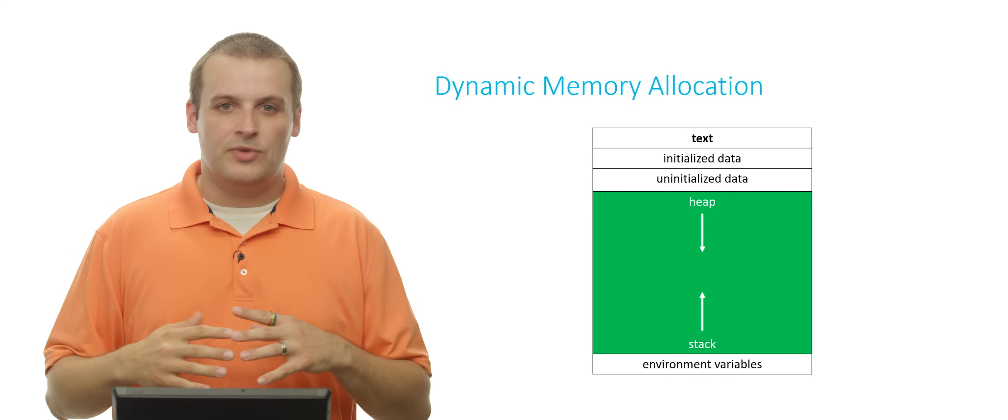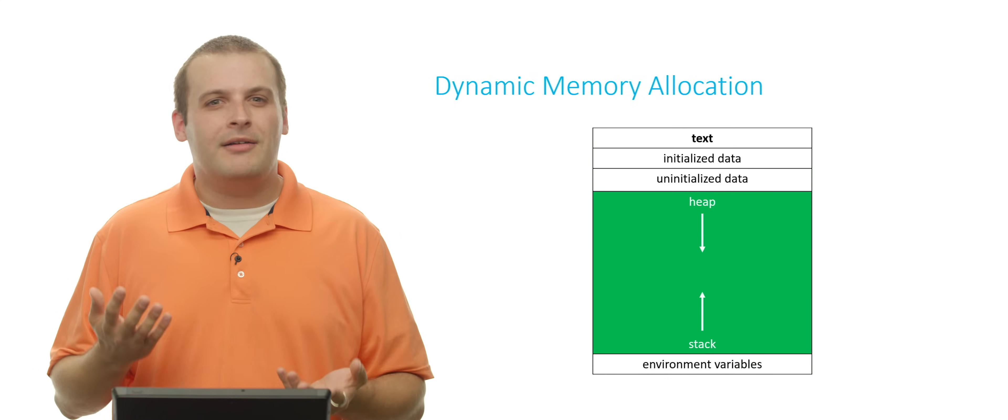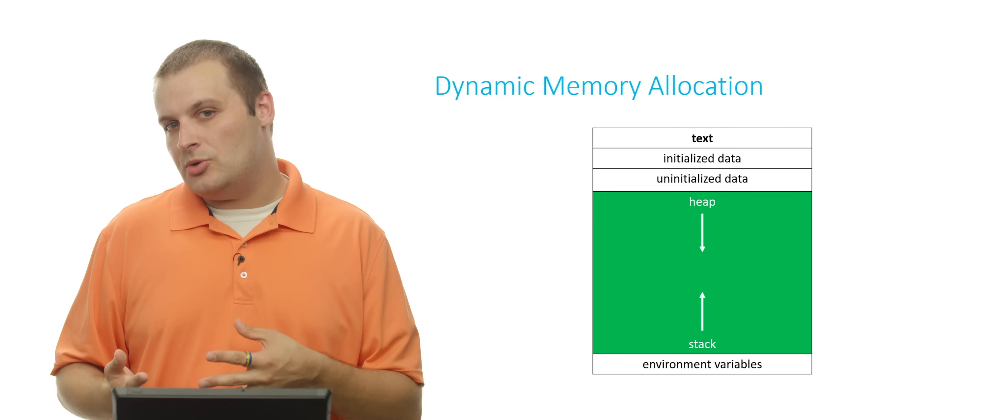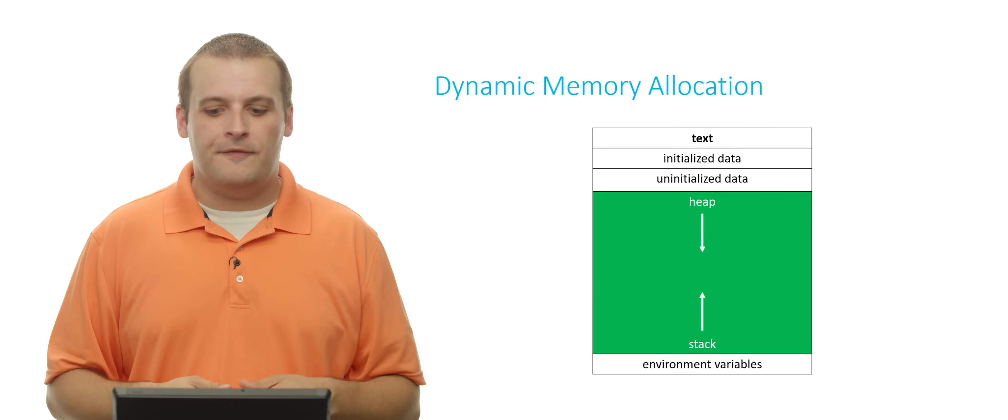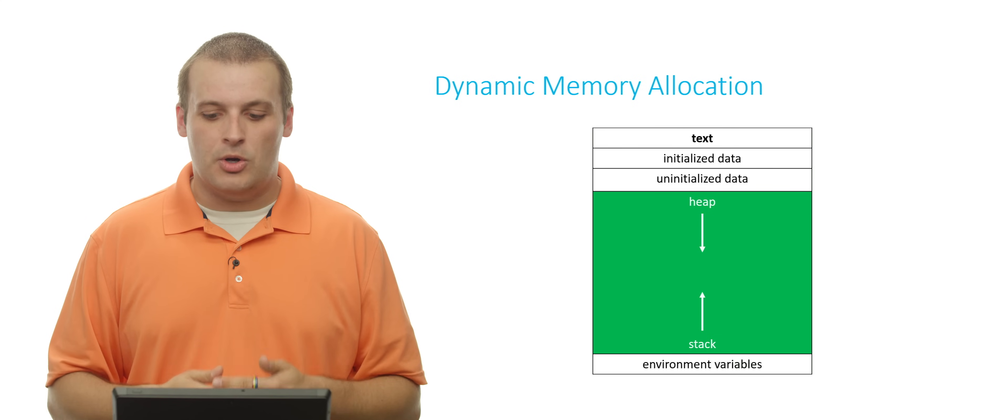And the heap will have higher numbers, and they'll allocate downward. So it's really one giant pool of memory. But we call it two different things depending on how it's being used. The stack for statically declared memory grows up, and the heap for dynamically allocated memory grows down.